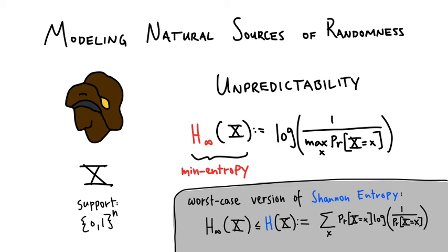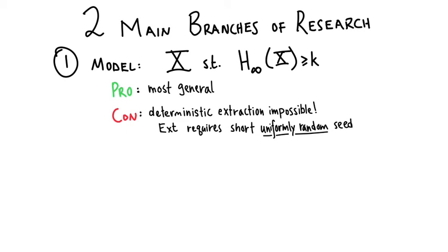This is sort of a minimal requirement for some weak source. There have been two principal branches of research into randomness extraction. In the first branch, we model our sources just as sources where the only constraint is that there's sufficient min-entropy, at least k. The advantage is that this is the most general treatment of randomness sources — we're assuming as little as possible about the natural source. The downside is that deterministic extraction is actually impossible in this most general setting.